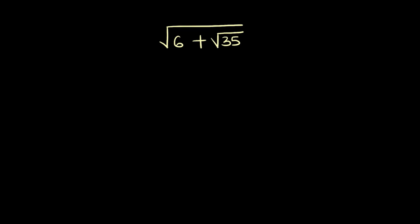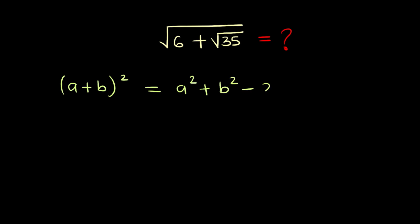How do we evaluate this problem which says find the square root of 6 plus root 35? Before I solve this problem I'll quickly take us through a simple explanation. If you have the sum of two numbers a plus b and you square it, this is a known identity which will give us a squared plus b squared minus 2ab. That is, expanding the left hand side gives us the right hand side.